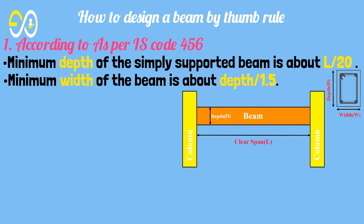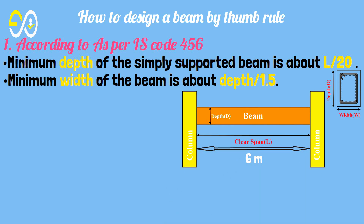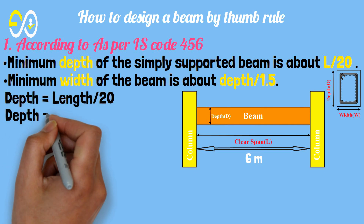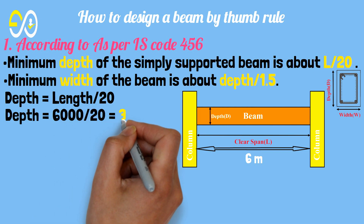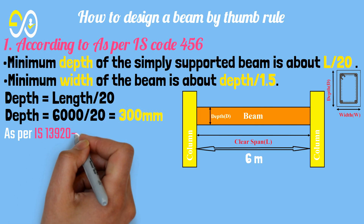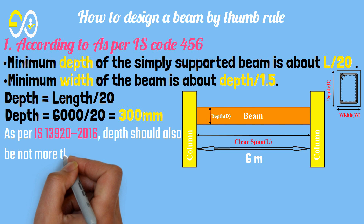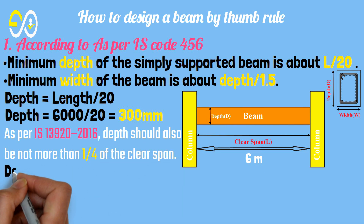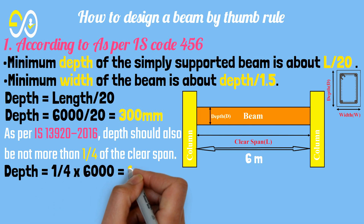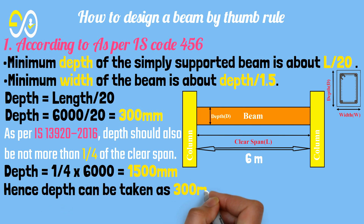Example 1: If the length of the simply supported beam is 6 meters, then what should be the minimum depth and width of the beam? Depth equals length over 20, so depth equals 6000 over 20, which equals 300 millimeters. As per IS 13920:2016, depth should also be not more than 1 over 4 of the clear span, so depth equals 1 over 4 times 6000, which equals 1500 millimeters. Hence, depth can be taken as 300 millimeters.